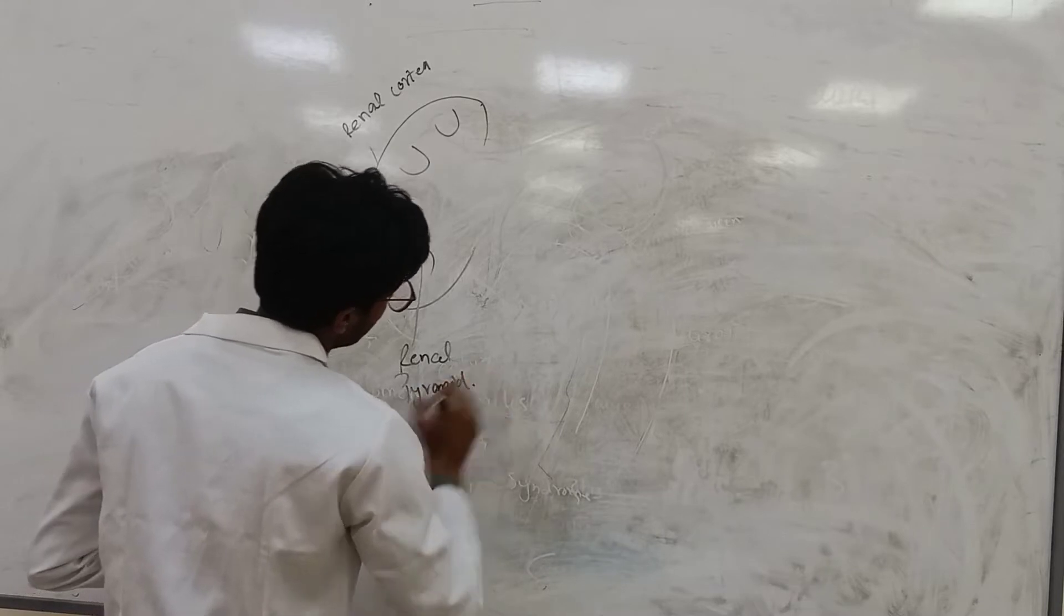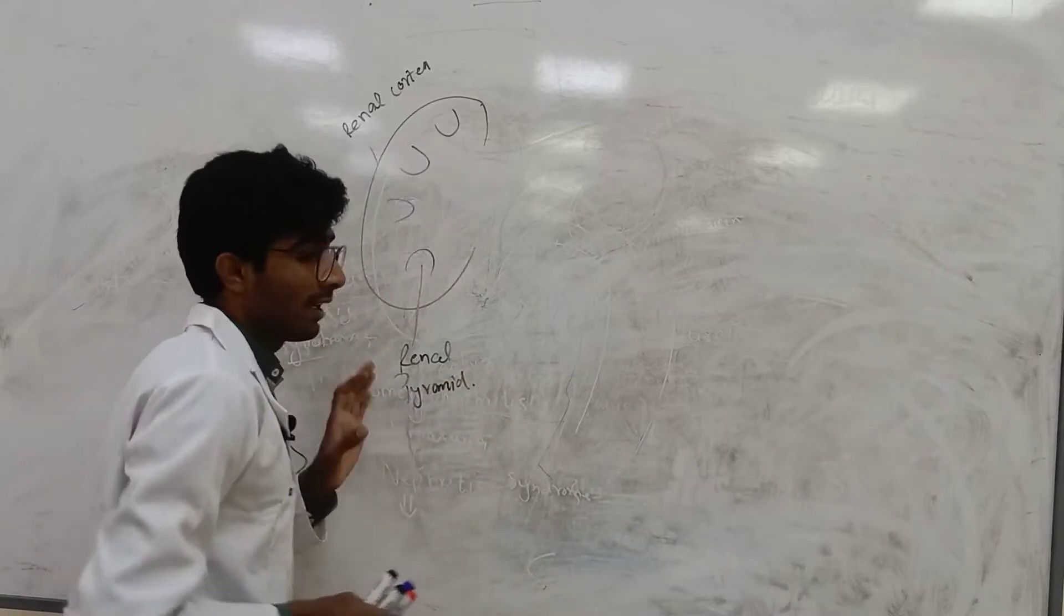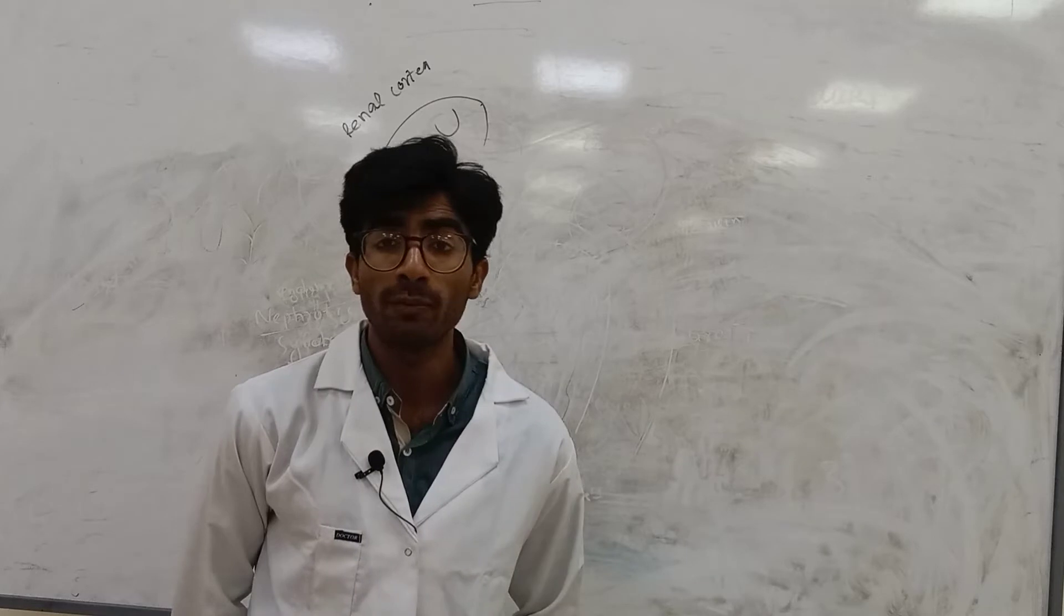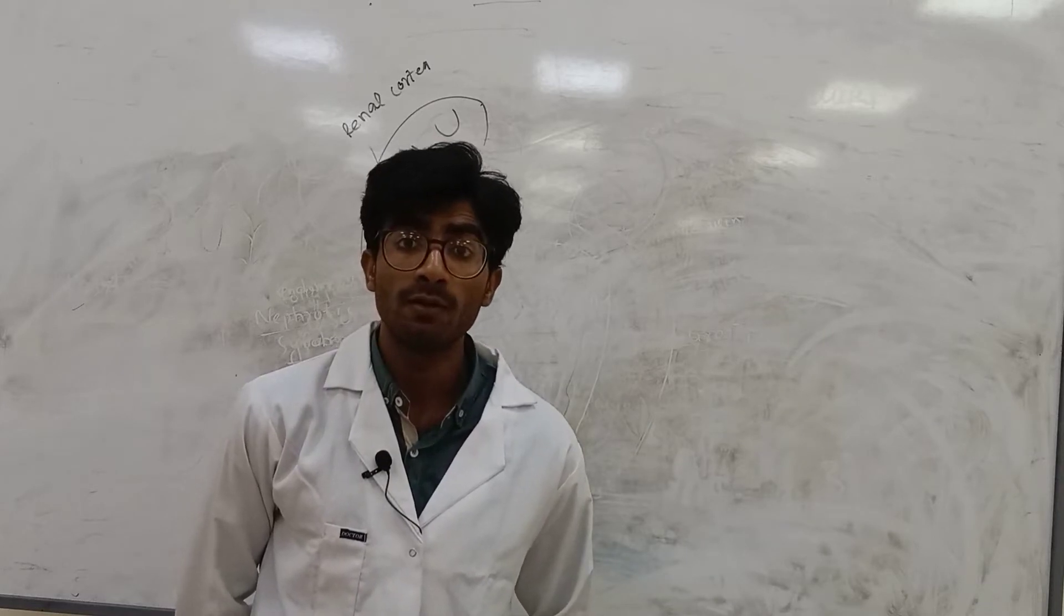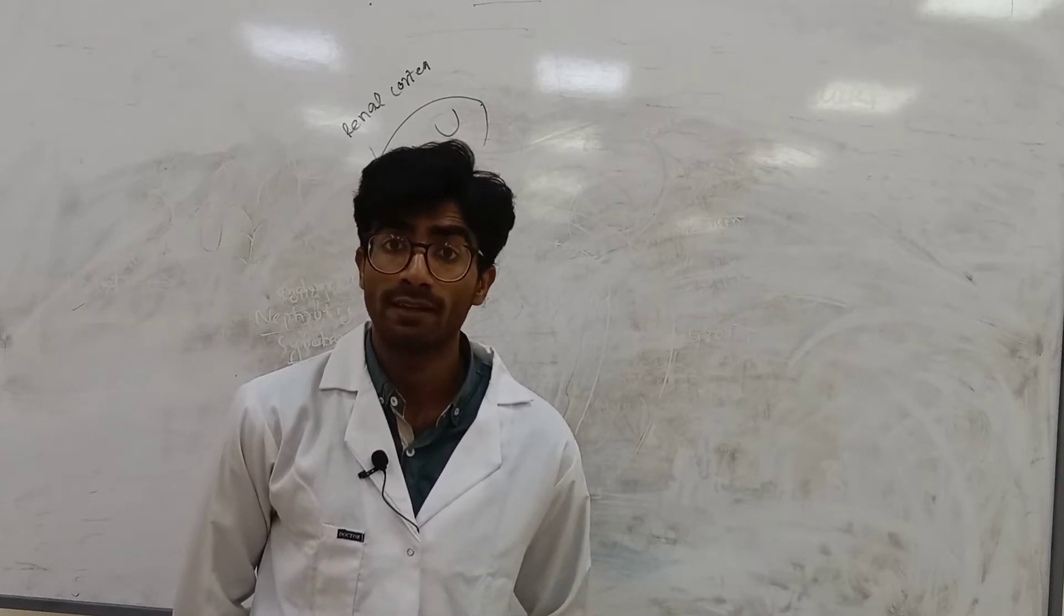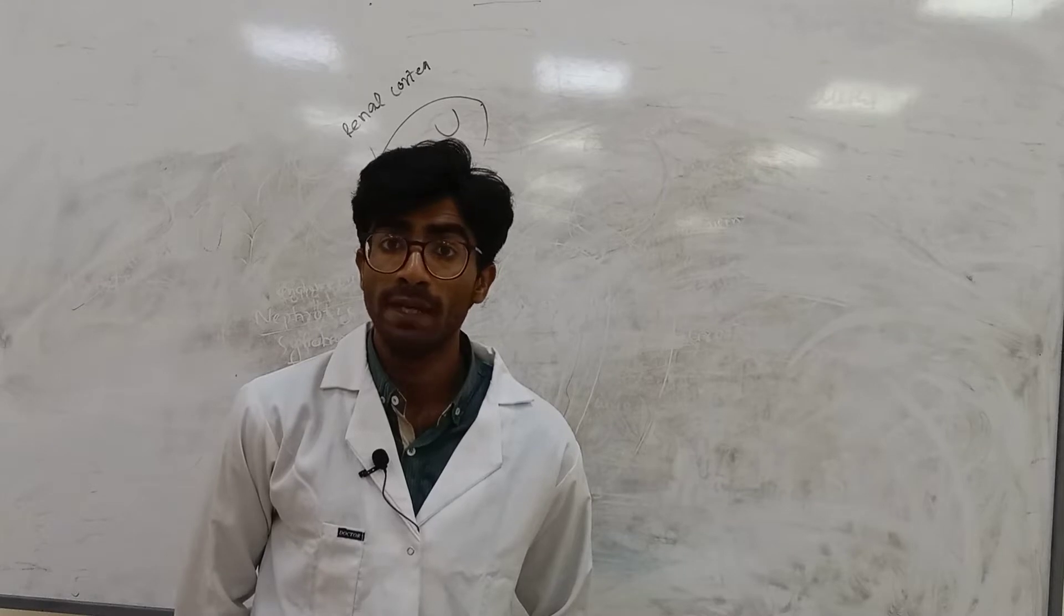In renal pyramid, there are 2 million nephrons approximately which are found mostly in young or adult, male or adult, male and female.